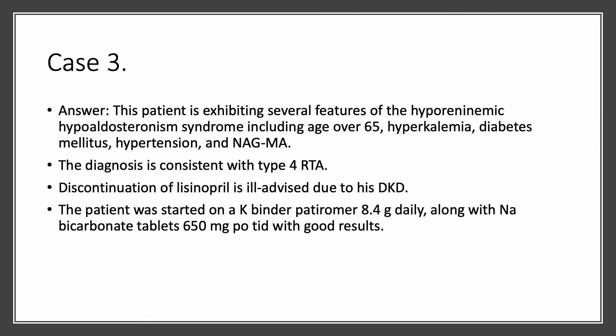This patient is exhibiting several features of hyperreninemic hypoaldosteronism. This patient has hyperkalemic renal tubular acidosis. When we have hyperreninemic hypoaldosteronism, we have aldosterone deficiency. We call that Type 4 RTA, which is by far the most common type of RTA. He's over 65, he's hyperkalemic, he's diabetic.